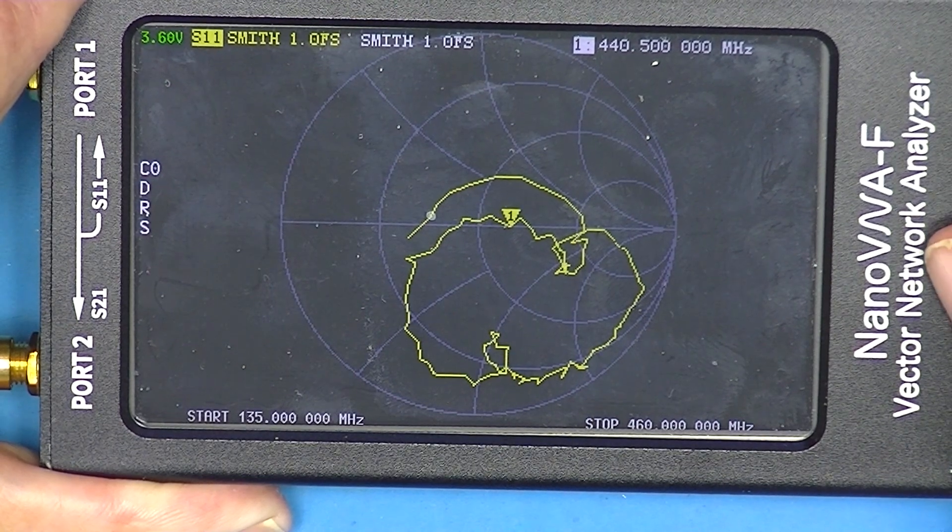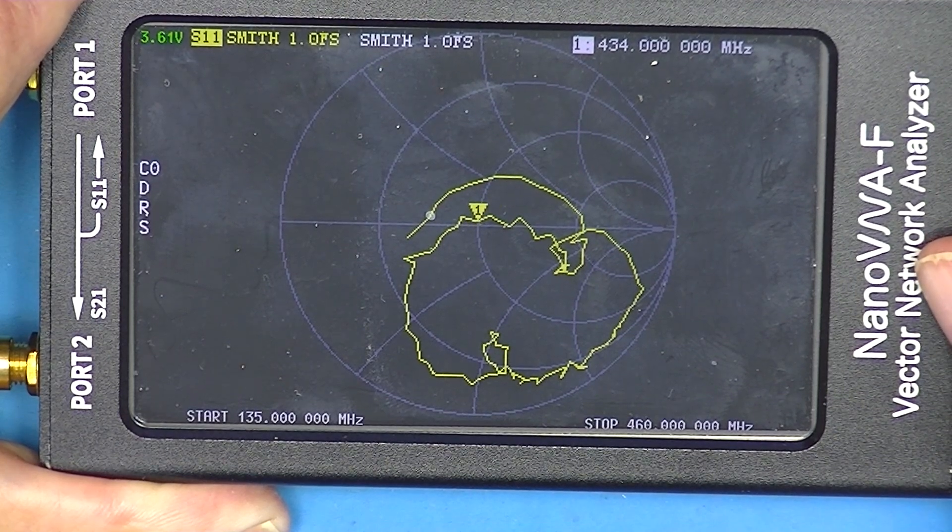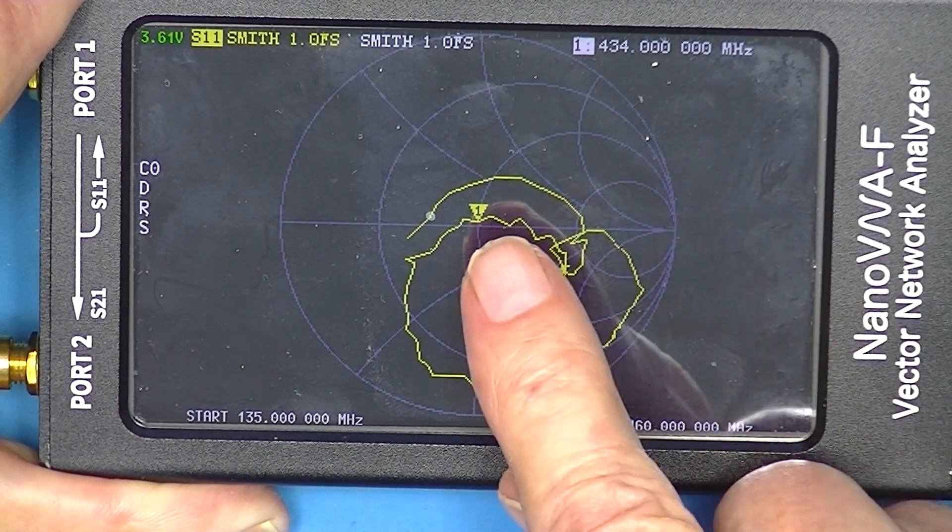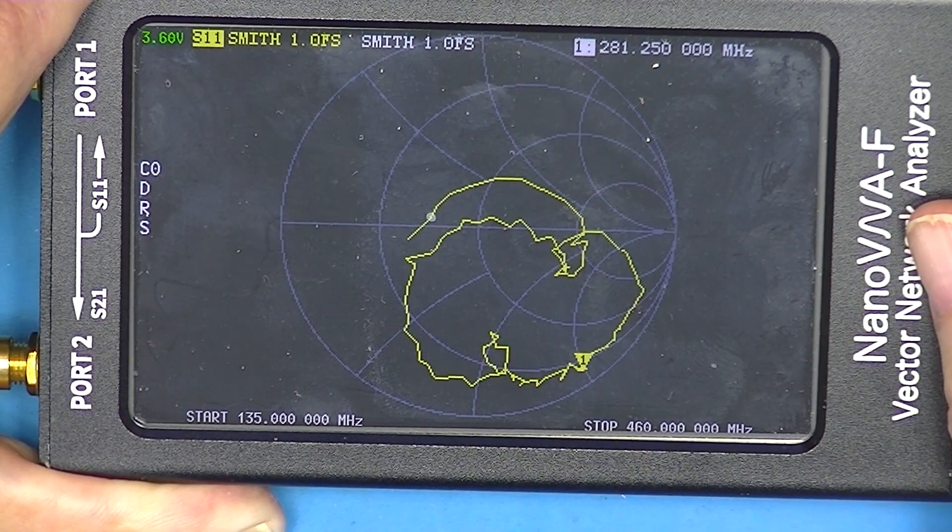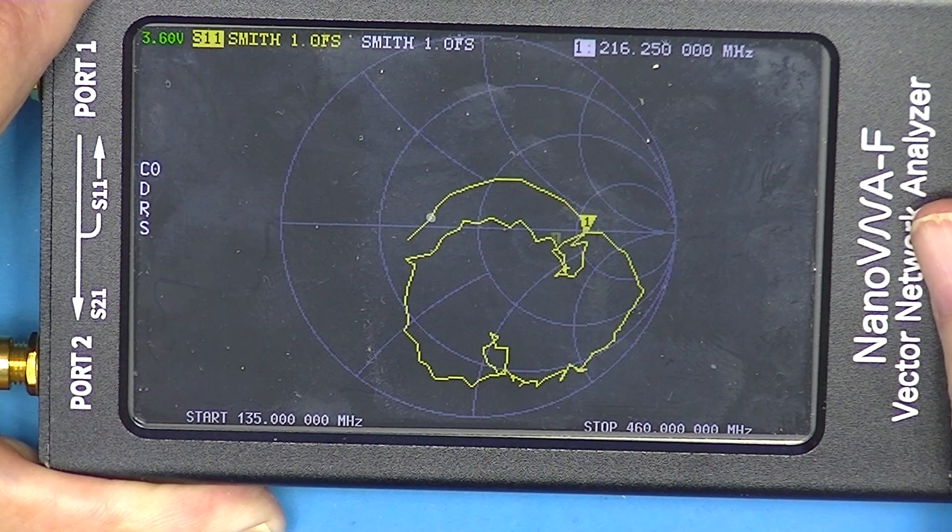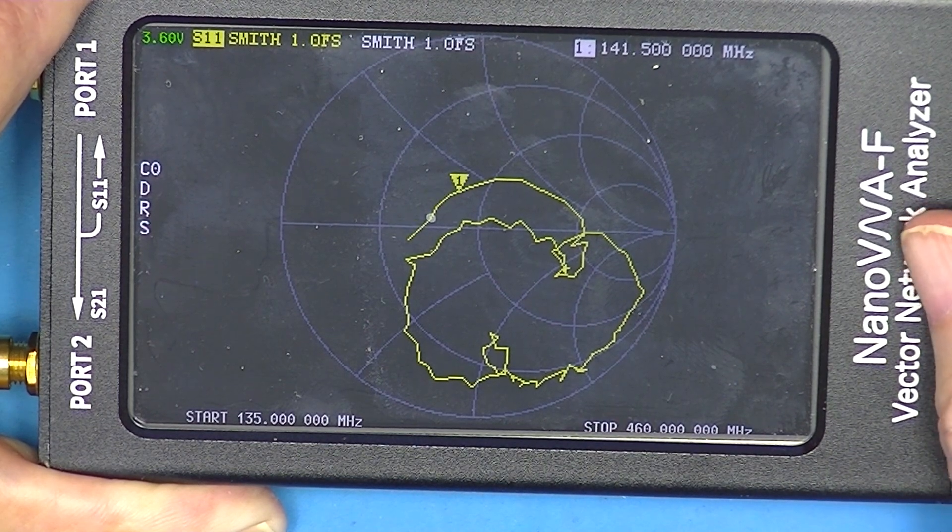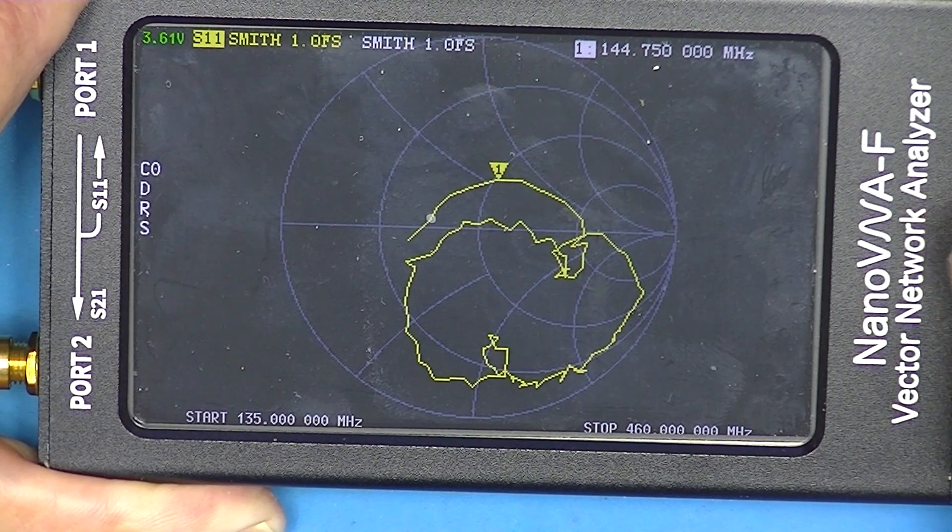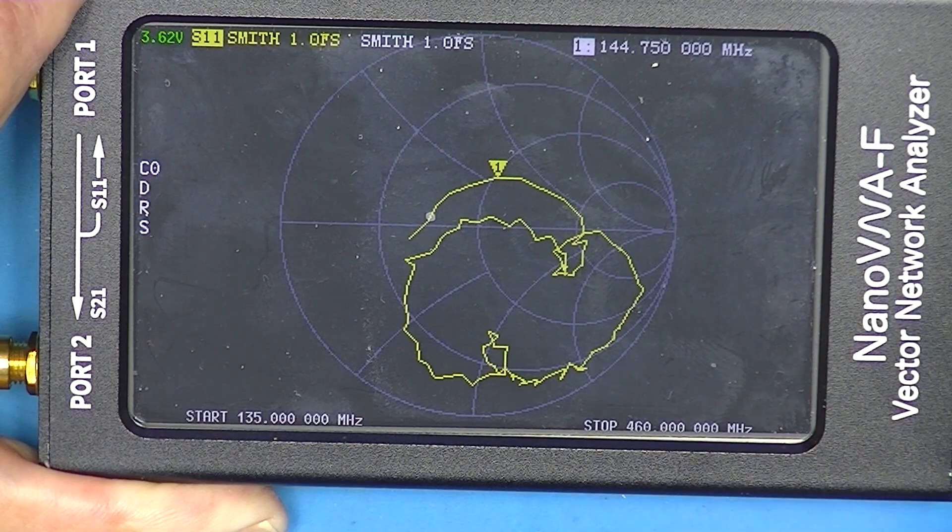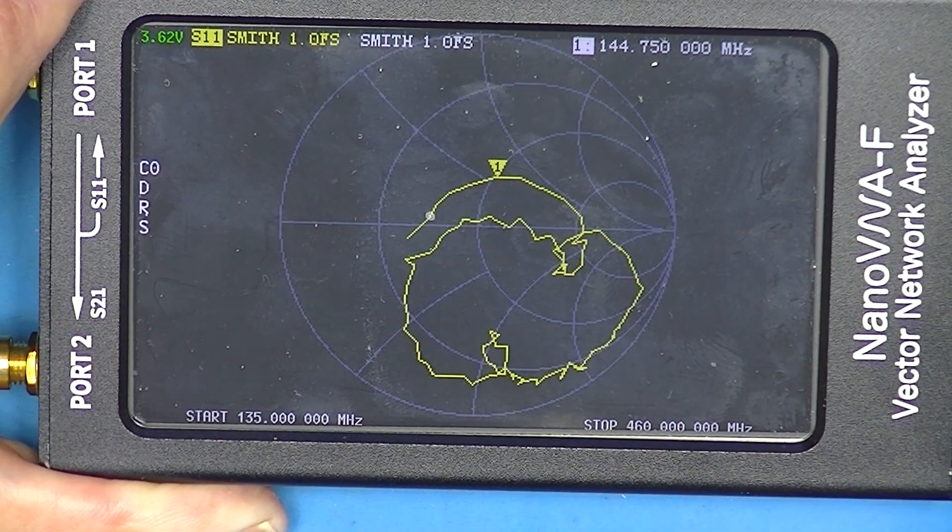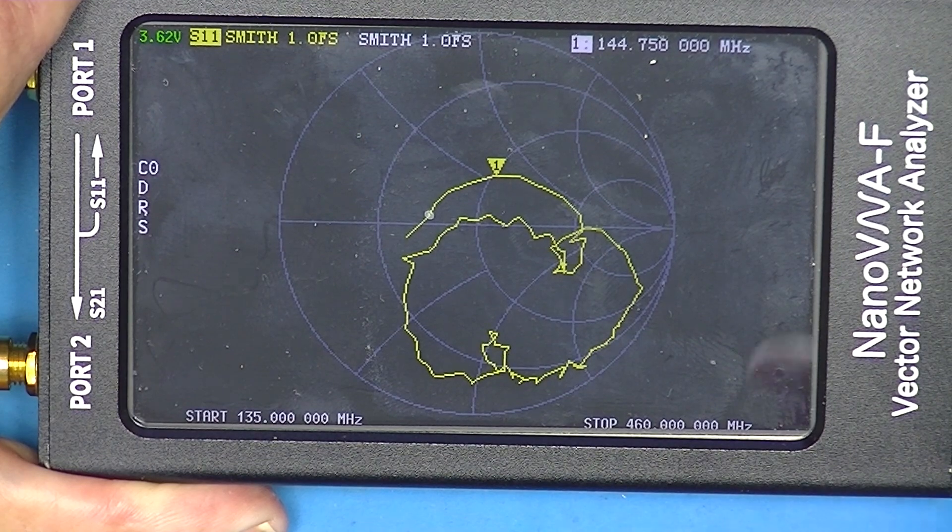See we're almost perfect at 434 right there. But in the two meter band, we're hanging right around there. So that's our dual band W antenna.